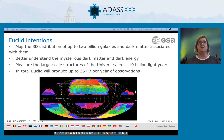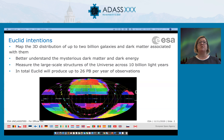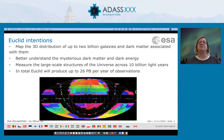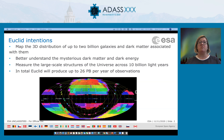Euclid is a medium-class mission that will create a 3D map of up to 2 billion galaxies. The Euclid mission wants to understand why the expansion of the universe is accelerating and what is the nature of the source responsible for this acceleration — what physicists refer to as dark energy. Euclid will explore how the universe evolved over the past 10 billion years, producing an enormous amount of data — about 26 petabytes per year of observations. You can see here a nice diagram of the Euclid survey plan, where each color represents one year of observations.